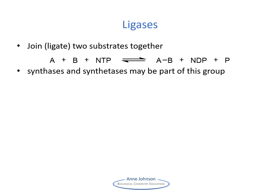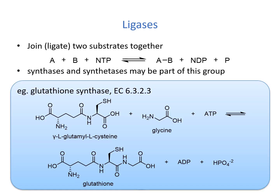Ligases join, or ligate, substrates together. These reactions require input of energy, commonly from hydrolysis of ATP, although other nucleotide triphosphates can be used instead. They are often found in biosynthetic pathways. Glutathione synthase catalyzes the formation of the peptide bond to form glutathione, with the energy coming from hydrolysis of ATP, which activates the hydroxyl group of the carboxylic acid to make it a better leaving group.